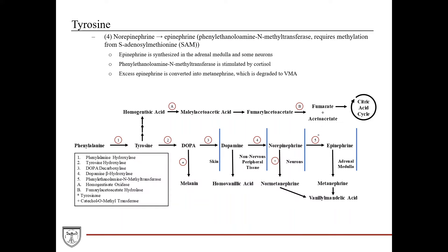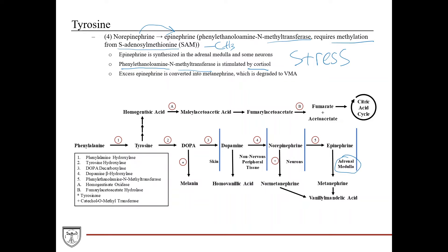The last step of this pathway, mainly contained to the adrenal medulla, is where norepinephrine is converted into epinephrine, catalyzed by phenylethanolamine N-methyltransferase, which requires methylation from S-adenosylmethionine, or SAM, a methyl donor. This enzyme is stimulated by the hormone cortisol. Since cortisol is secreted in response to stress, this explains the adrenaline rush — cortisol stimulates synthesis of epinephrine and norepinephrine in the adrenal medulla. Excess epinephrine is converted into metanephrine, which is also degraded to VMA.